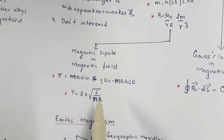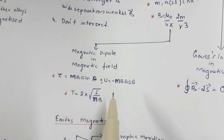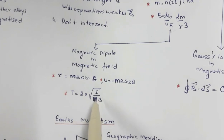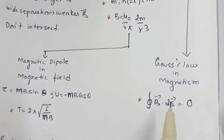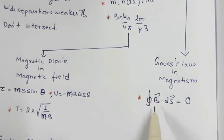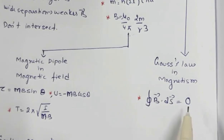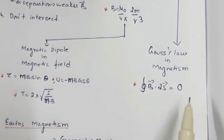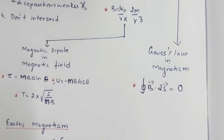When this dipole is disturbed slightly from its position of stable equilibrium, it undergoes oscillation, and the expression for the time period is T = 2π√(I/mb), where I is the moment of inertia. Gauss's law in magnetism states that the integral over a closed surface of B·dS equals zero, showing that magnetic monopoles do not exist.